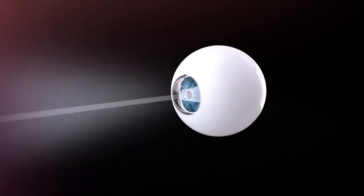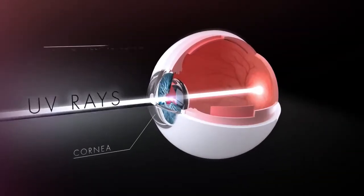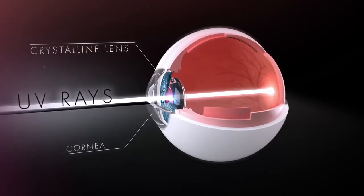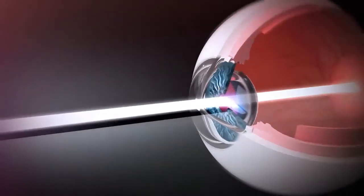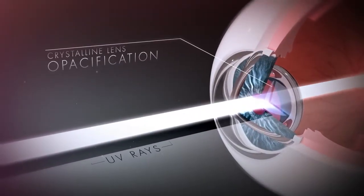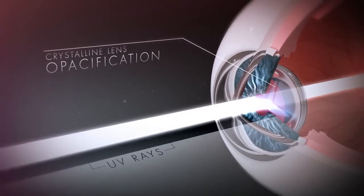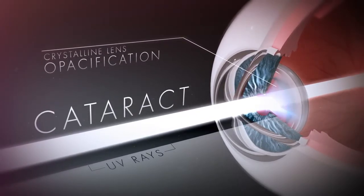Every day, UV rays attack the cornea and the crystalline lens. Over time, their cumulative effect contributes to the crystalline lens getting cloudy, potentially leading to cataract.